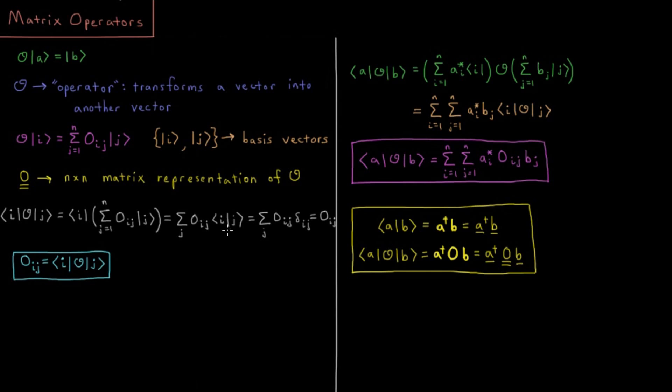We know from previous videos that these basis vectors form an orthonormal basis set. So if i and j are equal, you get a 1, they're normalized. If i and j are different, you get a 0, they're orthogonal. So this is a sum from j of Oij times delta i, j.